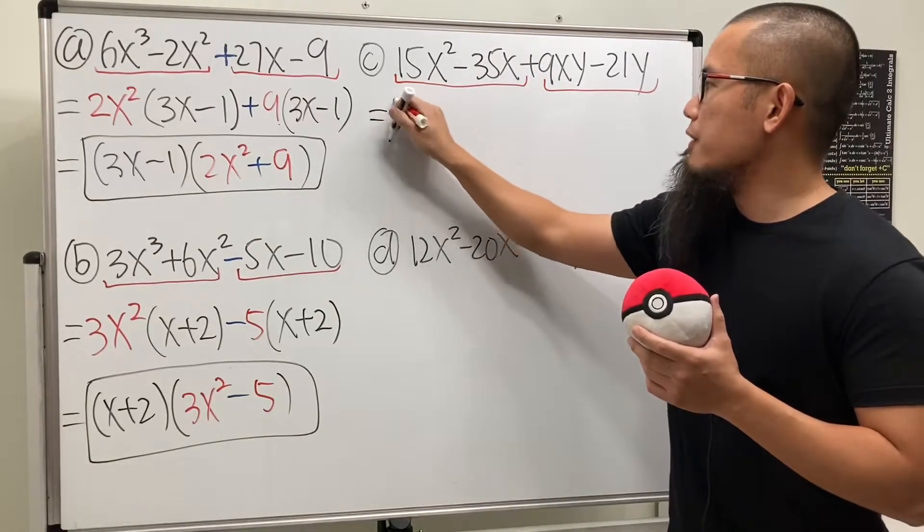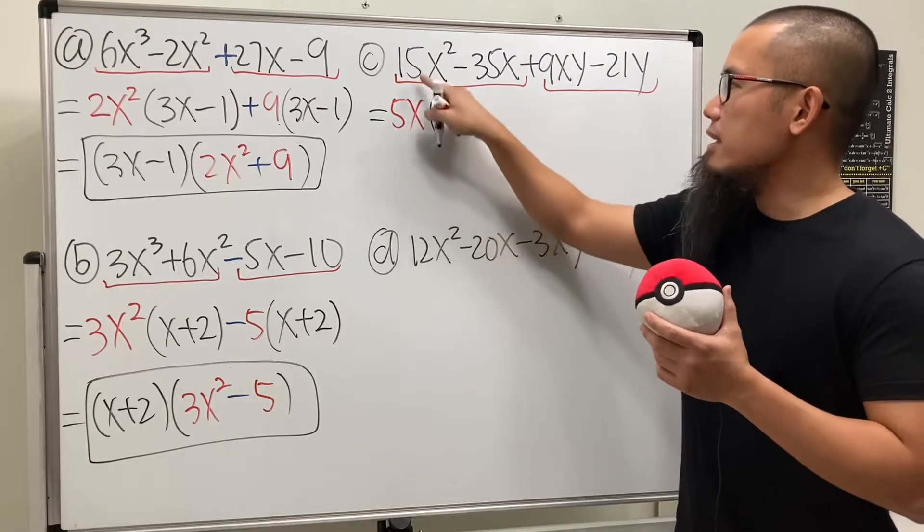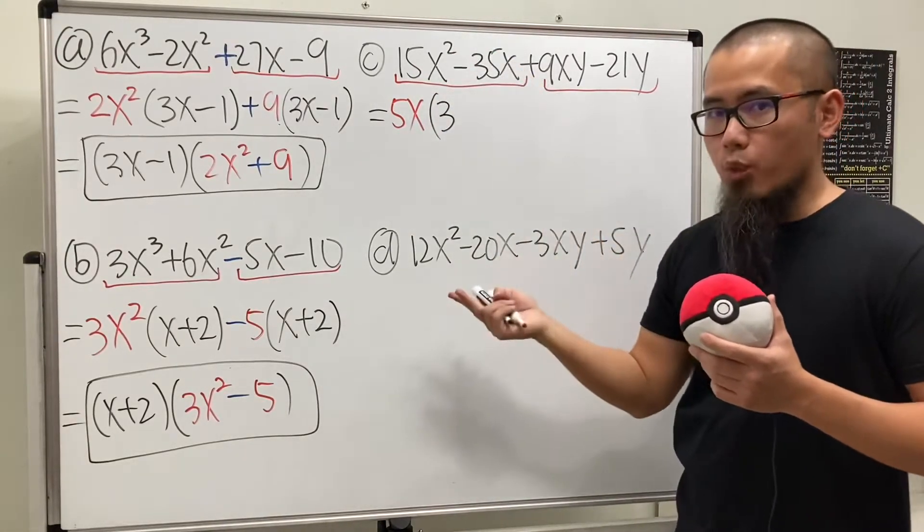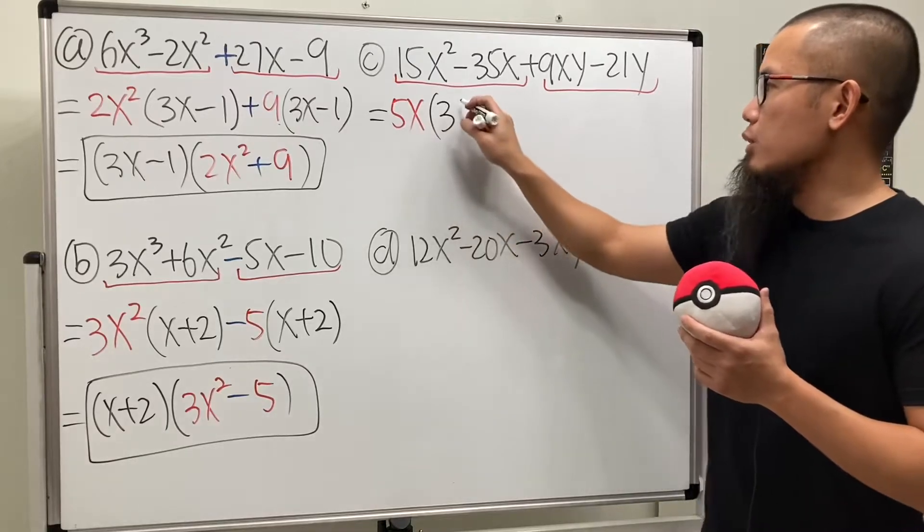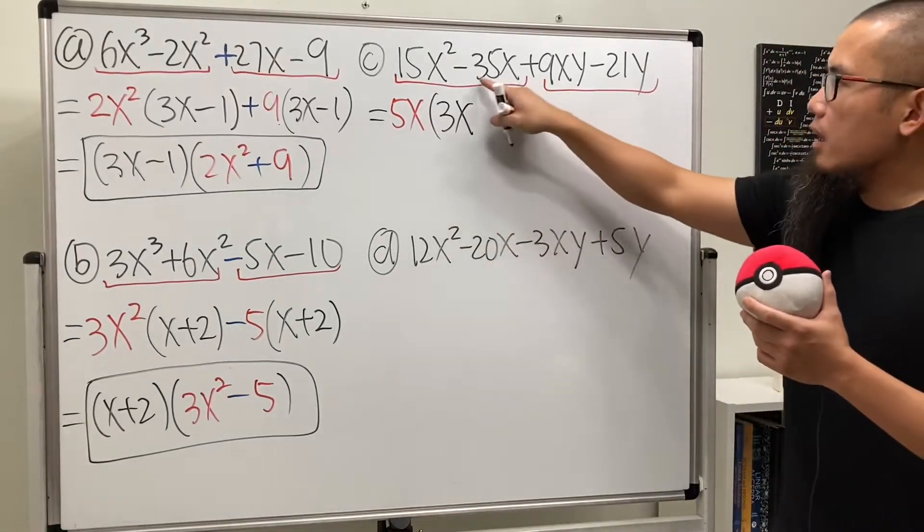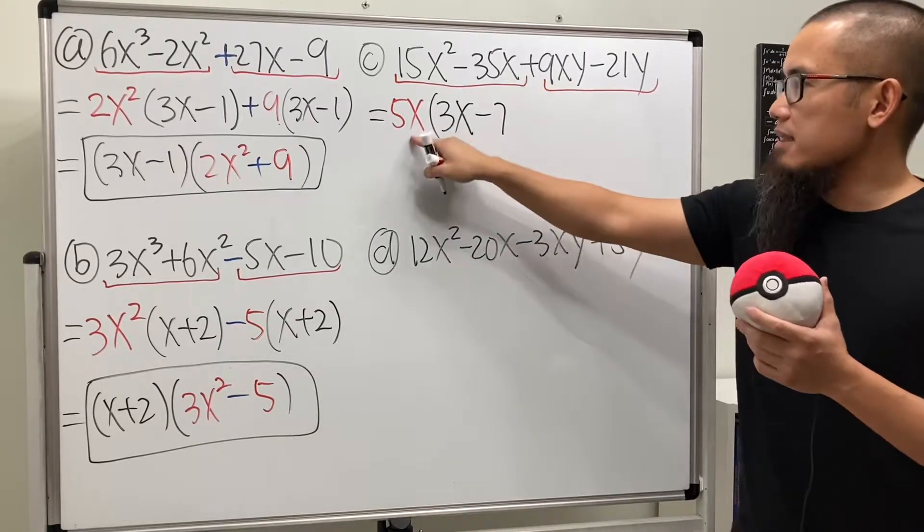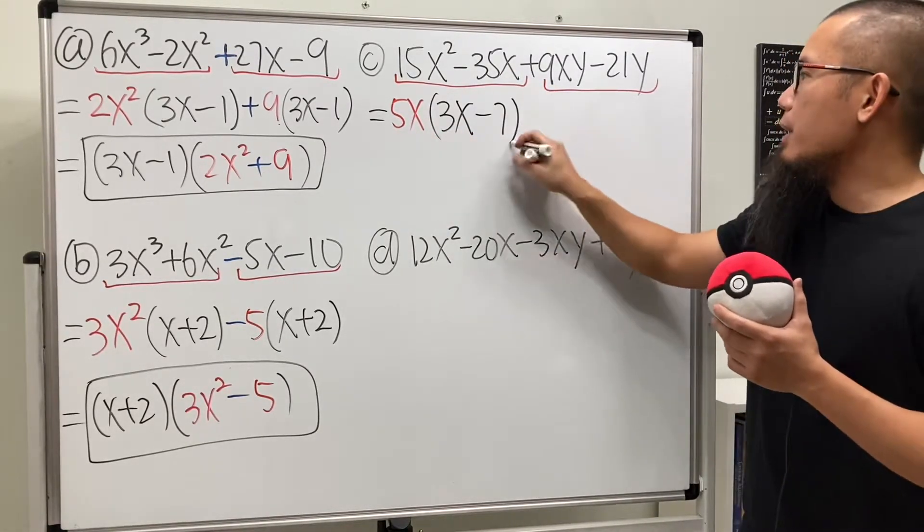And also the x. So let's go ahead and factor out 5x. And then 15 divided by 5 is 3. Originally, we have x squared. But we took out one of them. So it's just x left. All right. So this is negative 35 divided by 5. We have negative 7. And the x is out already.